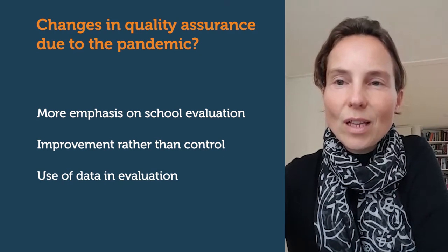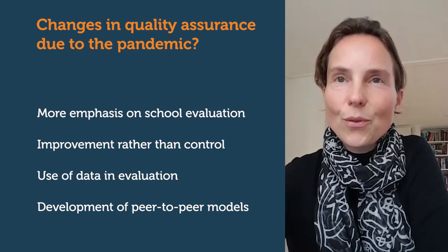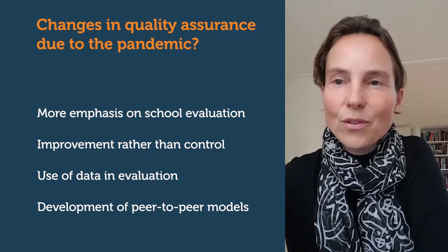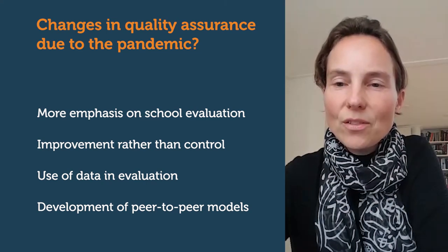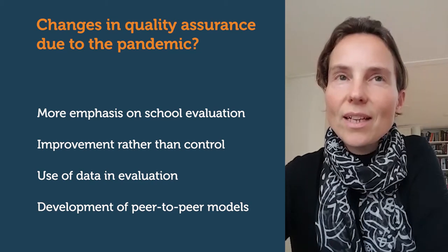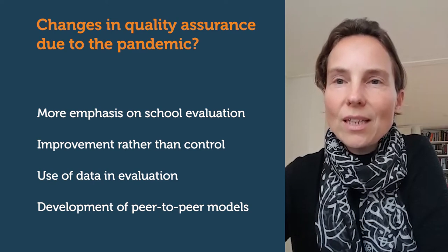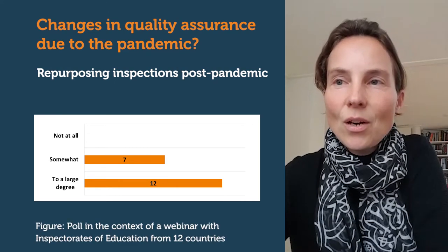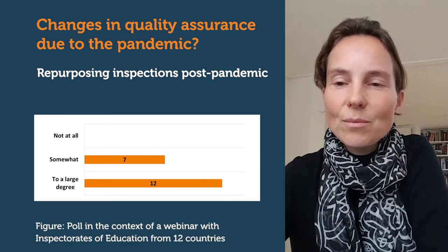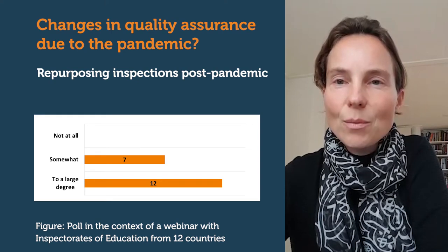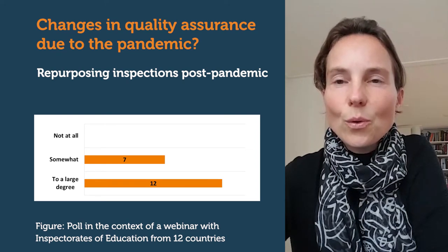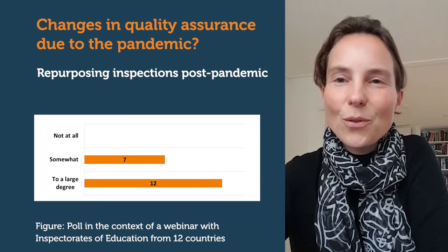We've also seen the development of peer-to-peer models where schools would evaluate each other's work and where that would feed into external inspections. The conversations that we've had with external inspectorates of education is that they expect to prolong that function, particularly because schools are currently facing such challenges in reducing potential achievement gaps and addressing issues around inequality, and where a sole control function is just not considered feasible in reducing those gaps.